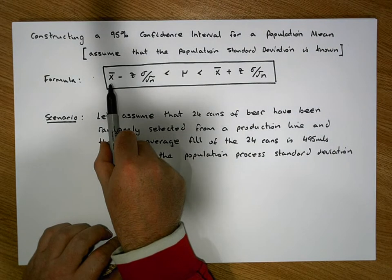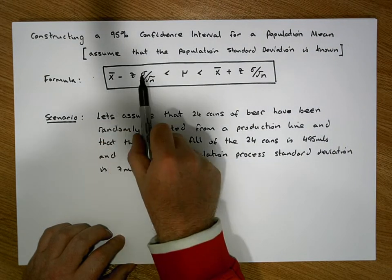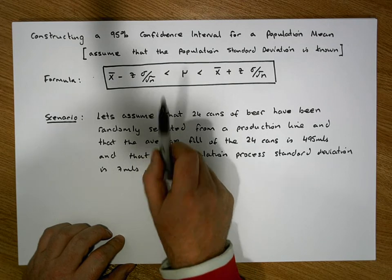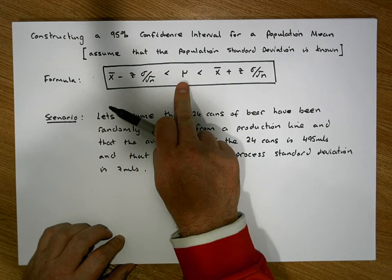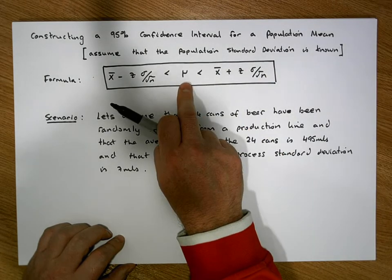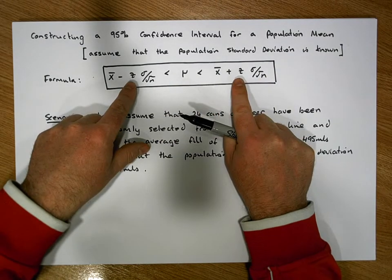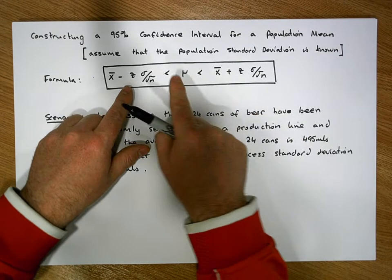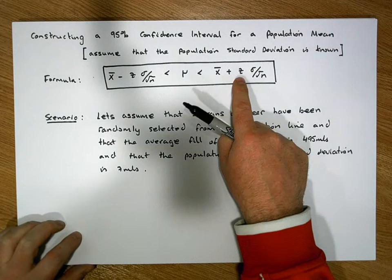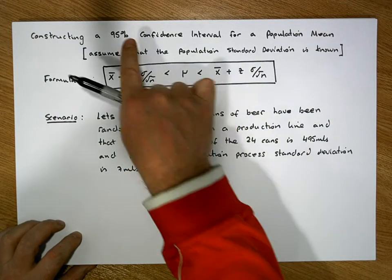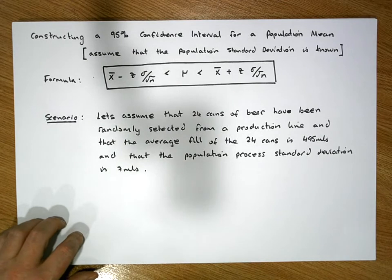Once you know the sample mean x-bar, the population standard deviation sigma, and the sample size n, we can construct a lower bound and an upper bound for the true population mean. That's based on z standard deviations on either side. This particular z value is associated with the particular size of the interval that we want to calculate.